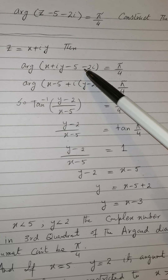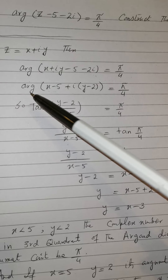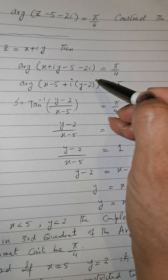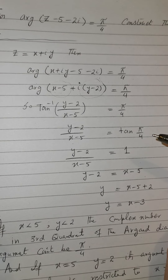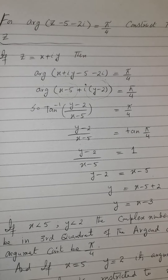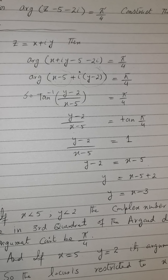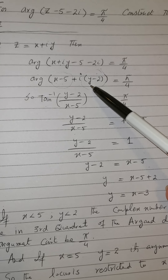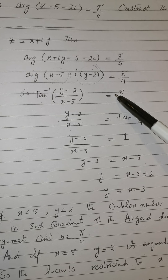In the next step, pair up the real parts and imaginary parts. We know that in the Argand diagram, the argument equals tan⁻¹(y/x). In this case, y becomes (y − 2) and x becomes (x − 5), so we have tan⁻¹((y − 2)/(x − 5)) = π/4.